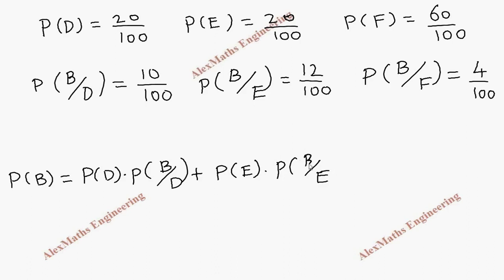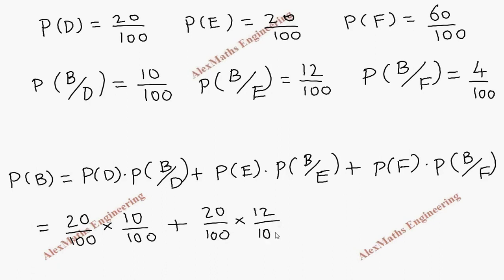Then choosing F and from F getting the bad tire. So these are the ways the bad tire can be got. So we are going to substitute the values, which is 20 by 100 into 10 by 100 plus 20 by 100 into 12 by 100 plus 60 by 100 into 4 by 100.